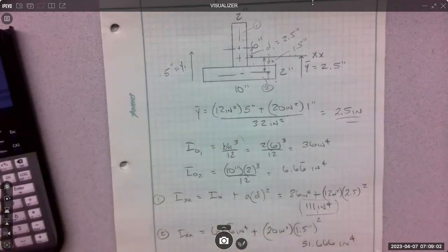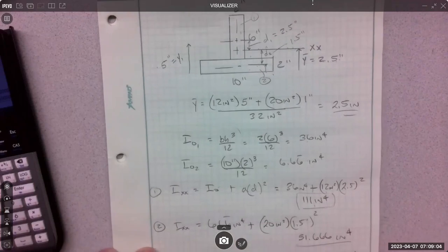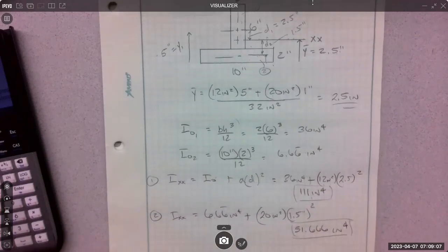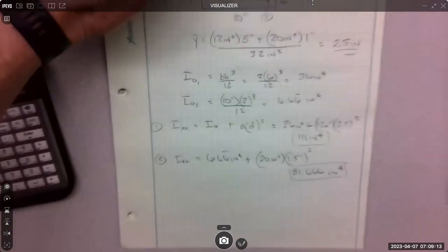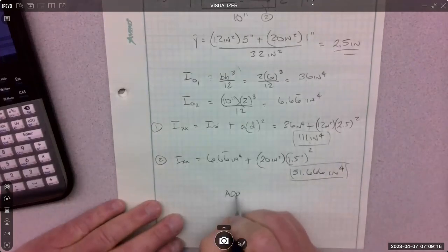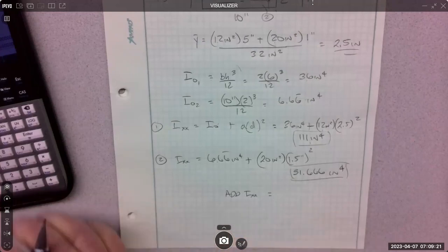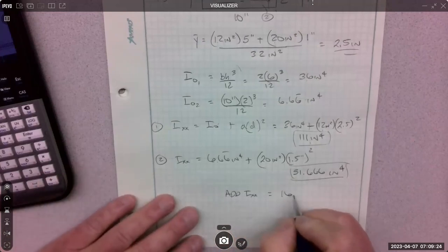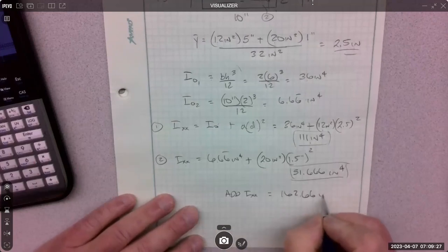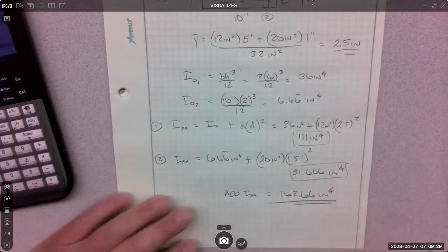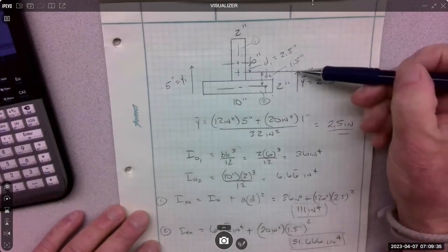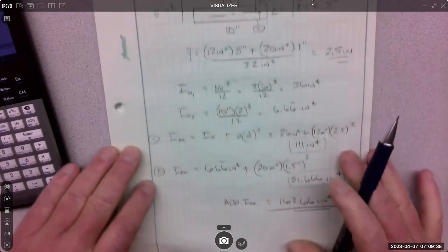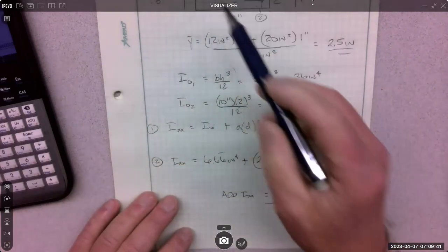That value is going to end up to be 51.666 inches to the fourth. So this one transferred 111, this one transferred 51.666. Now they're both at the XX axis, I can add them up. So the inertia I would use for this shape in bending stress, because it is the inertia at the composite centroid.